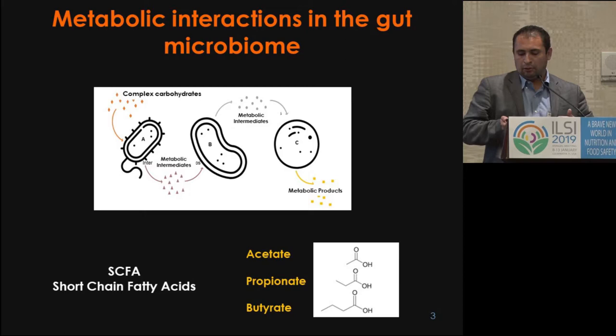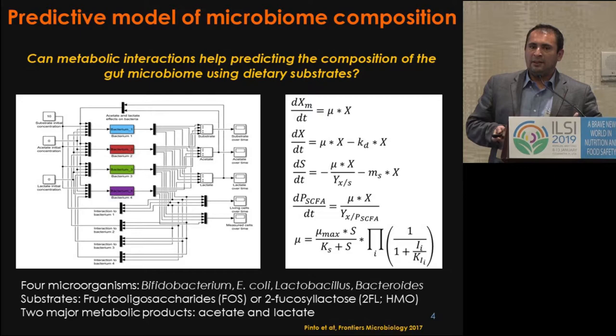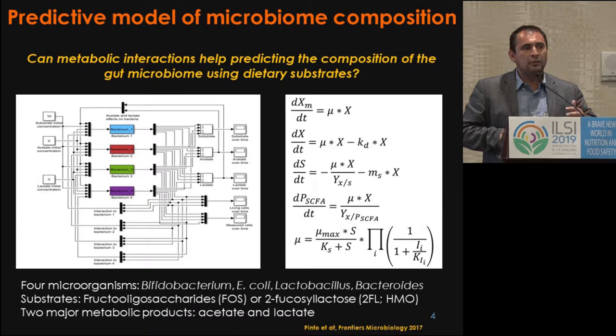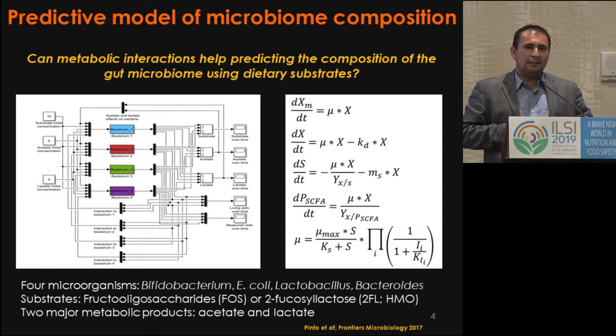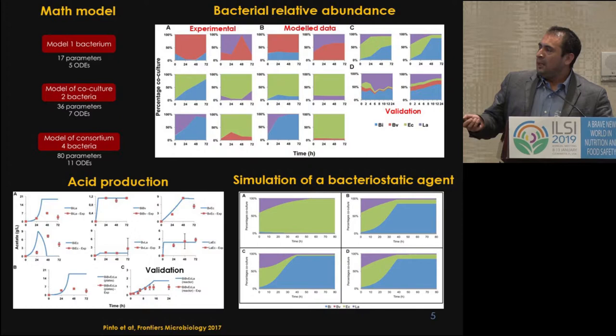For that, we took a simple system consisting of four different gut microbes from the Bifidobacterium genus, E. coli, Lactobacillus, and Bacteroides. We tested two common prebiotics: fructooligosaccharides and 2-fucosyllactose, which is an HMO. We measured experimentally two major short-chain fatty acids: acetate and lactate produced by the system.